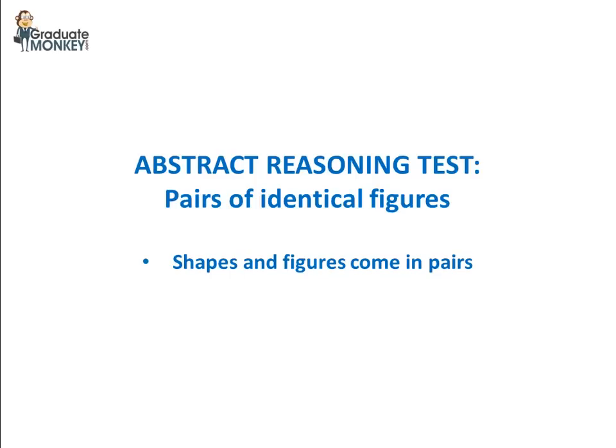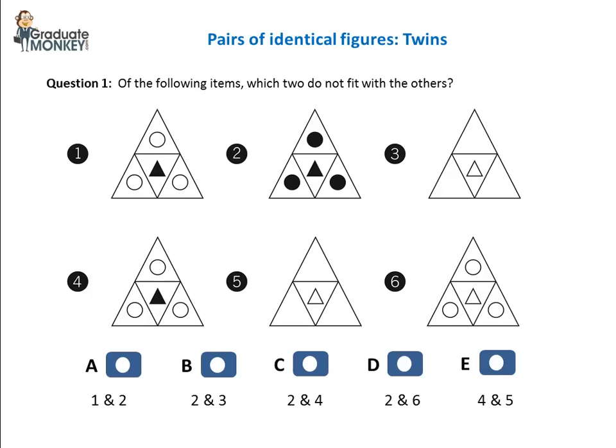This is where same shapes and figures may come in pairs and your task is to identify those figures that do not. Here's an example. Let me read the question first. Of the following items, which two do not fit with the others?